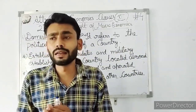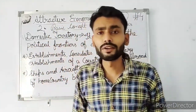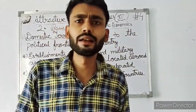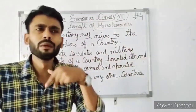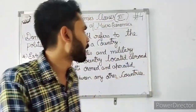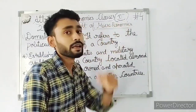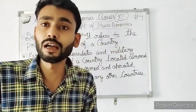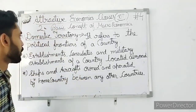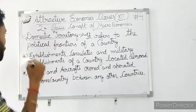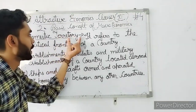There are a total of 8 to 9 concepts to learn. First of all, domestic territory, then normal resident, then residency, then citizenship, depreciation, net indirect tax. When we understand this chapter, we will be able to answer and solve questions. The first topic of this chapter is domestic territory.